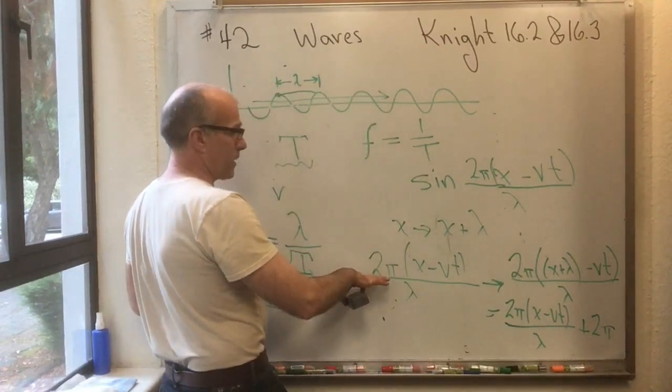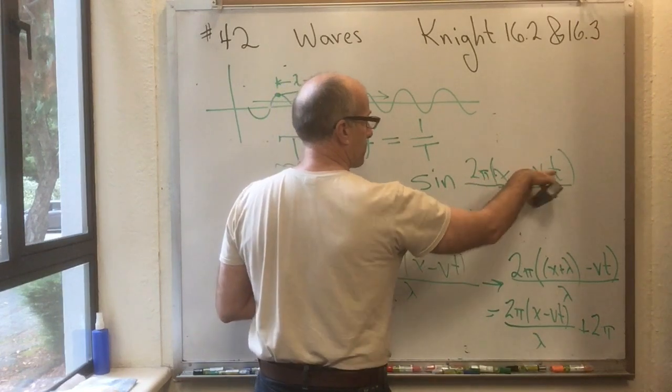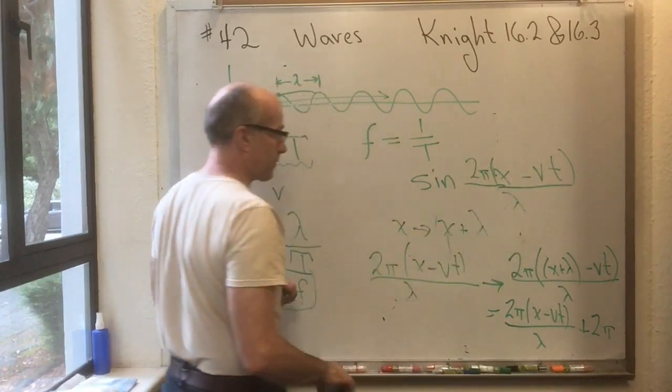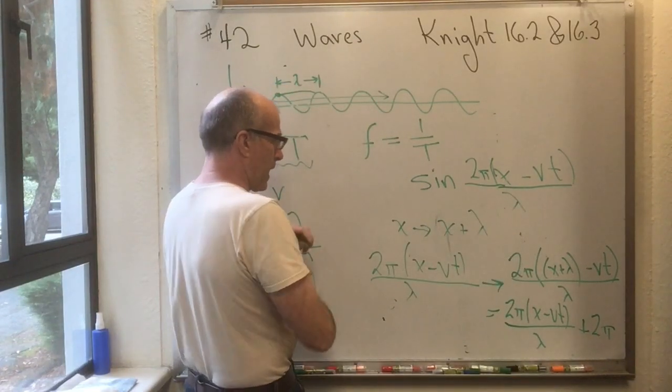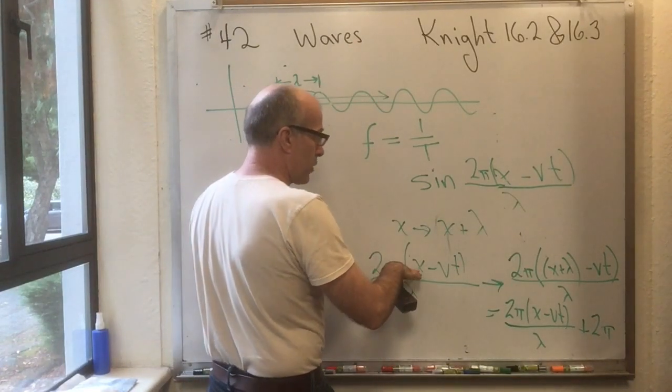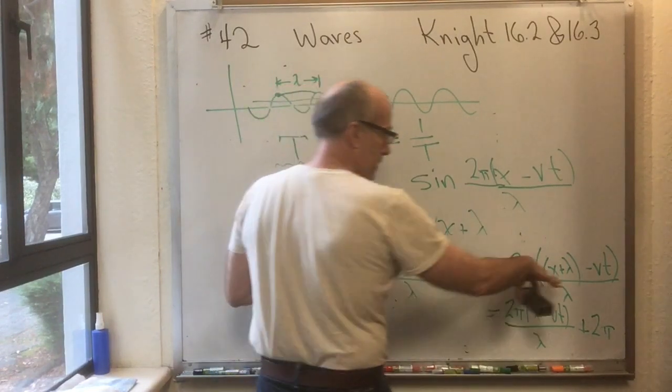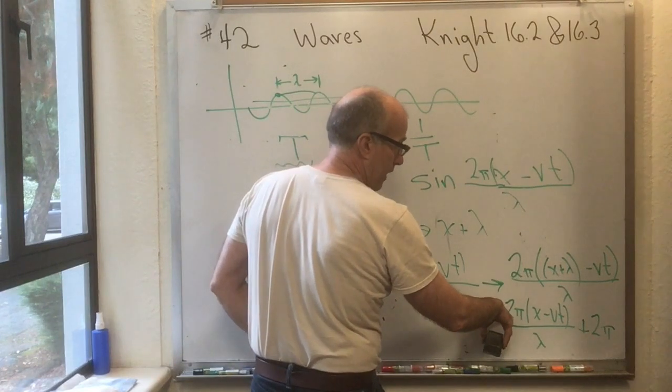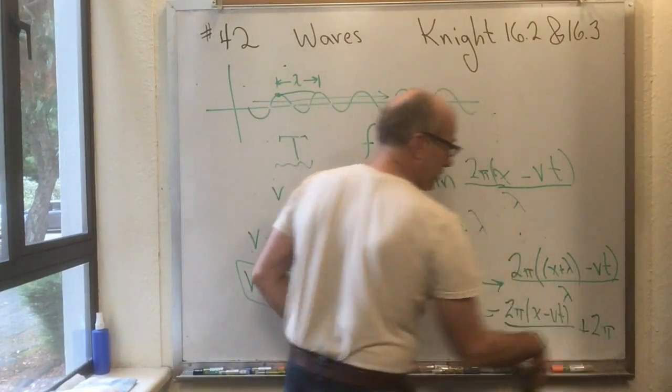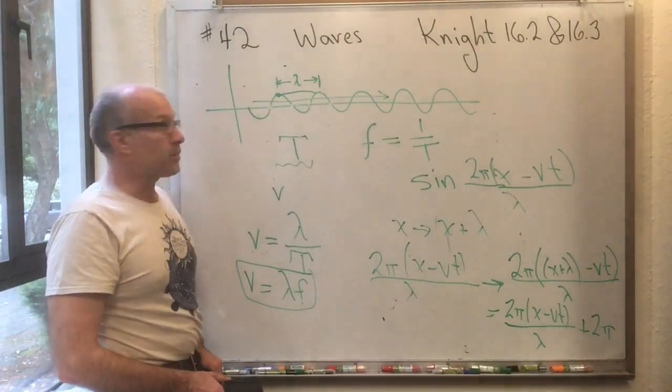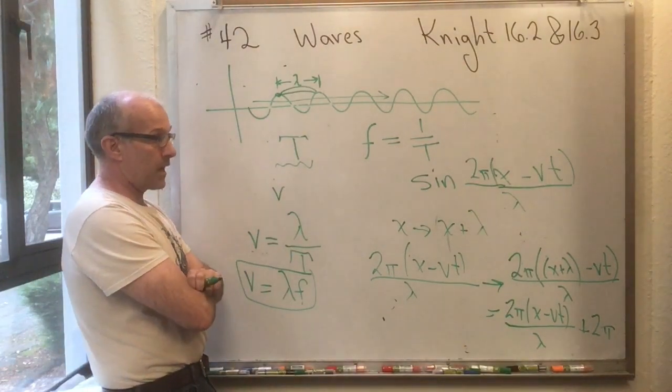And so what you see here is the nice way that I've chosen this. I put a 2 pi in front of the X minus VT and then divided it by lambda. We have something going to the right with speed V. And furthermore, if you go to the right by an amount lambda, you see that you get whatever you had before as the argument to the sine plus an additional 2 pi, which means you've gone exactly a full cycle to the right every time X goes to the right by lambda.